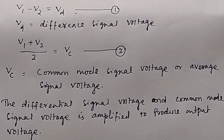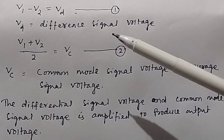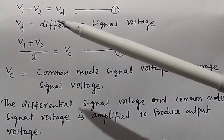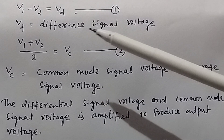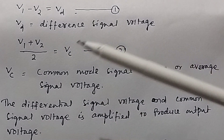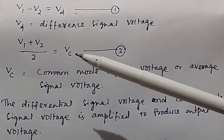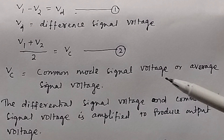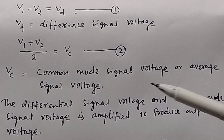In an operational amplifier you have two types of signal. One is your difference signal and another one is your common mode signal. The difference signal is V1 minus V2, and the common mode signal voltage Vc equals (V1 plus V2) divided by 2 — it is nothing but the average signal voltage.